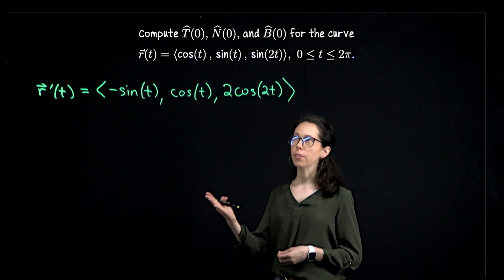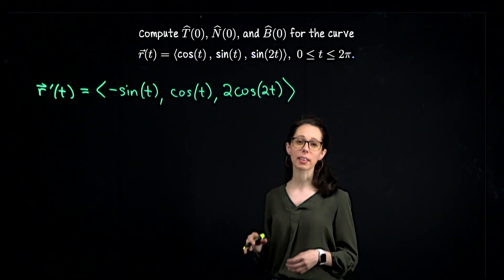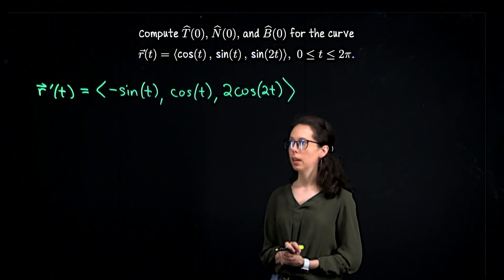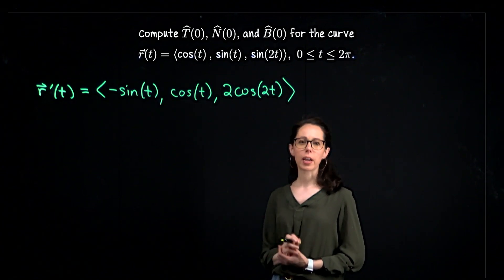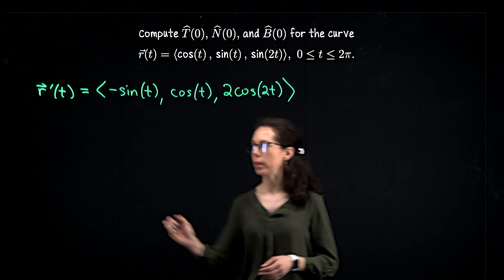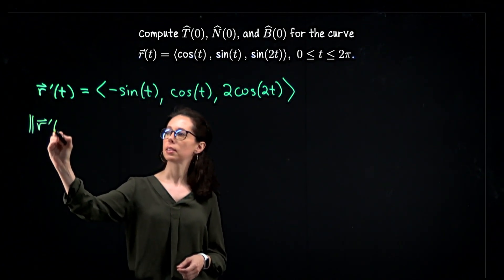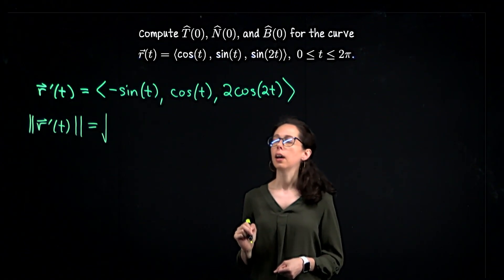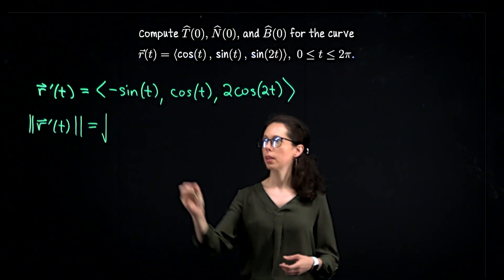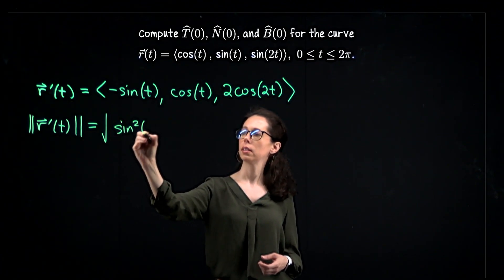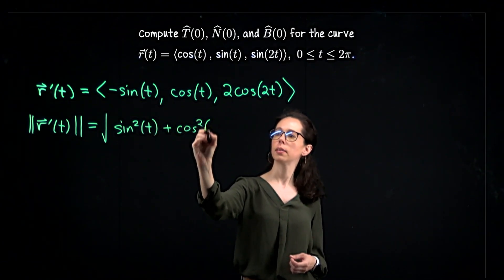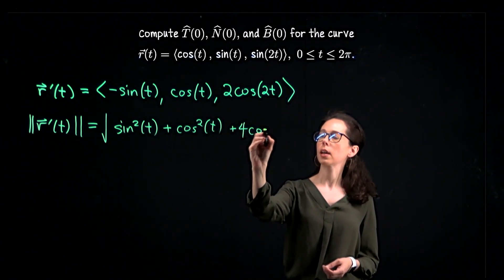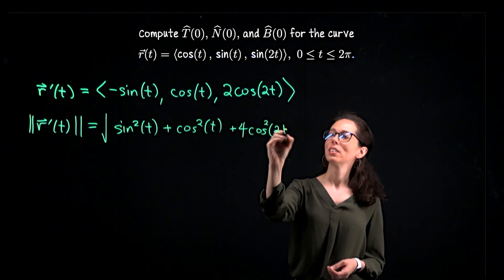What we need in order to get our first Frenet frame vector, the unit tangent vector, is to take this vector and find its unit length version — that's T hat. For that, you take the velocity vector and divide it by the speed. The speed is the length of the velocity vector: the square root of sine squared plus cosine squared, plus 4 cosine squared of 2t.